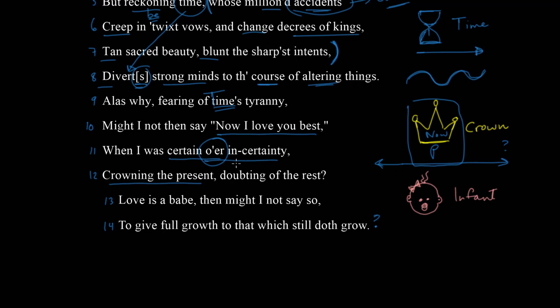The line referring to being 'certain or in certainty' is a little tricky. 'Or' could be literally 'over.' It's better to think of it loosely as 'in relation to uncertainty.' So I was certain in relation to uncertainty, which can be interpreted in different ways: certain despite uncertainty, or certain about uncertainty. If you read it as being about uncertainty, you would say: I'm completely certain that life is uncertain, and so the best I can do is to crown the present and just live in the here and now.